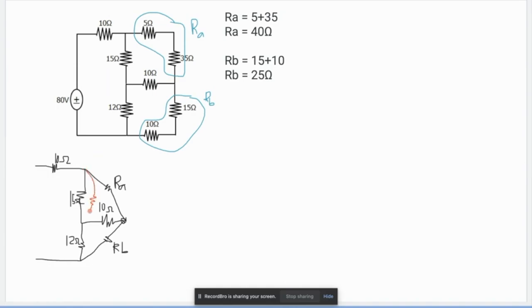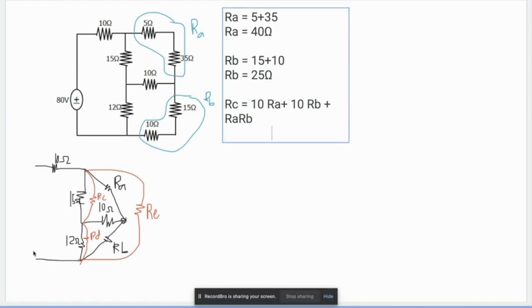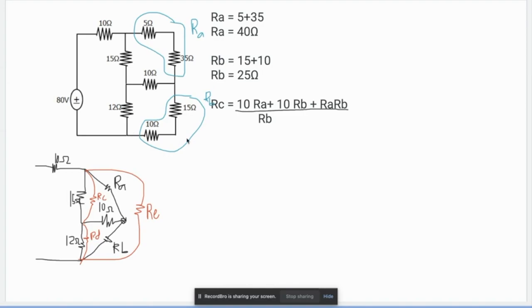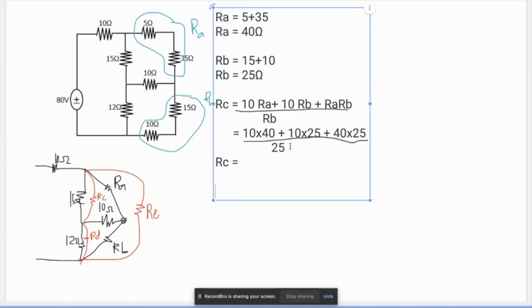So this now is Y connection, so that means you need to convert that into Delta. So this one will be Rc, Rd, your Ra. If you want to know the value of Rc, Ra times 10 plus 10 Rb plus Ra Rd divided by, what is the opposite resistor of Rc? This one opposite is this one, so that is Rb.